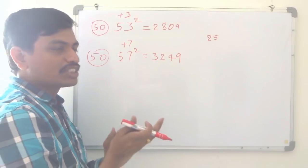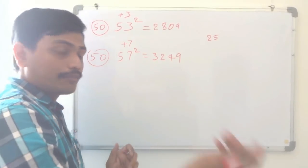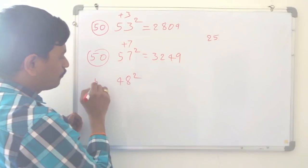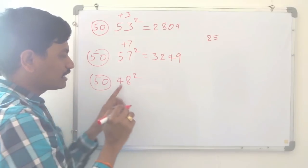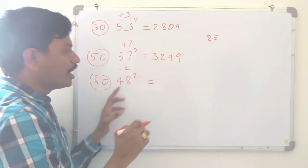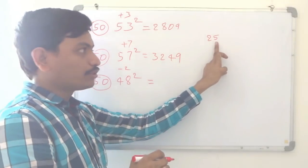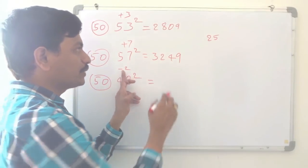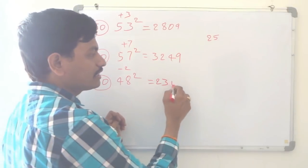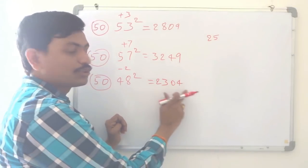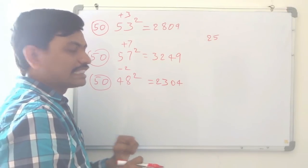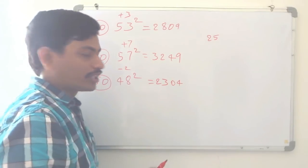Now let's take a number below 50, from 40 to 50. I will take 48 squared. 48 is how much lesser than 50? Minus 2. Always subtract or add to 25. So 25 minus 2 is 23. And 2 squared is 4; we write 04 because we need 2 digits. So 2304 is the square of 48.